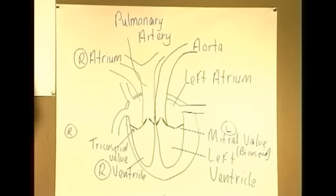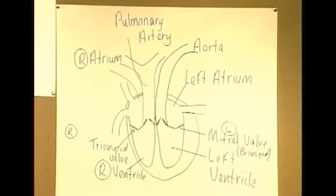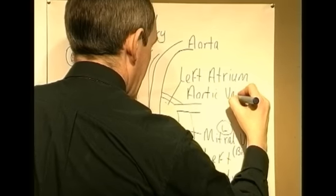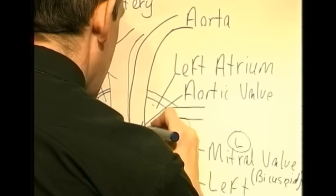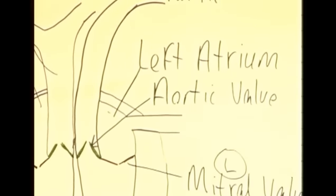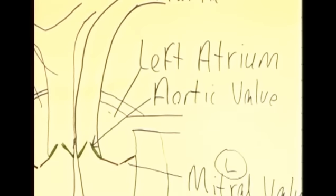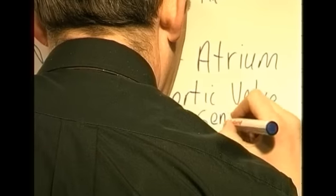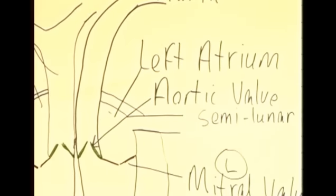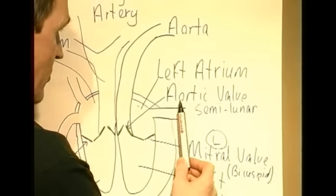Now we've noticed that between the left ventricle and the aorta there is a valve, and this valve is referred to as the aortic valve. In some older books you'll find this referred to as the aortic semilunar valve, because they have the appearance of half moons. But the correct way to refer to this valve now is simply as the aortic valve.